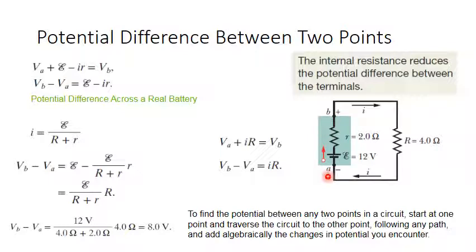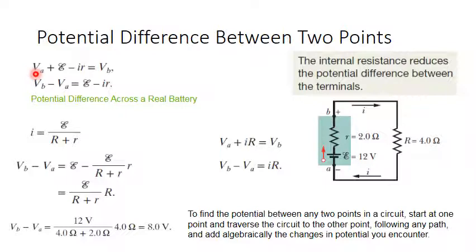Assume we are finding the potential difference between points B and A, starting from A. Going from A in the same direction as the current, we go inside the EMF. The potential VA plus the EMF of the battery minus the voltage drop across the internal resistance IR equals the potential at point B. So: VA + E − Ir = VB.